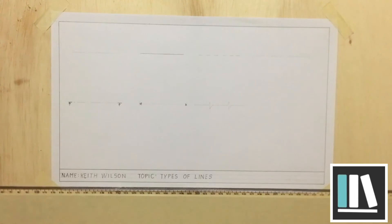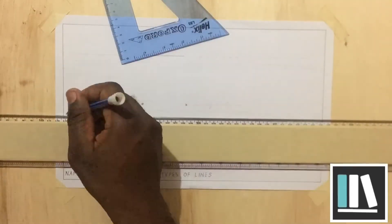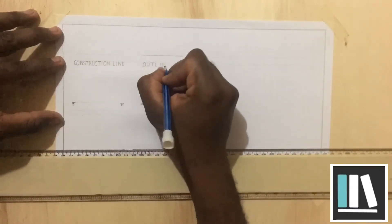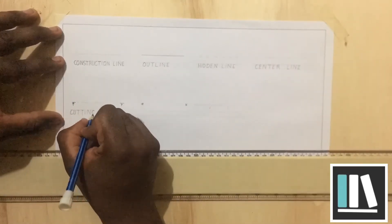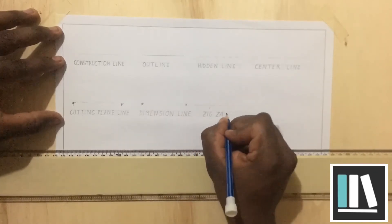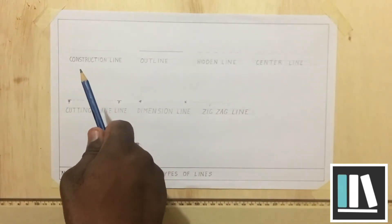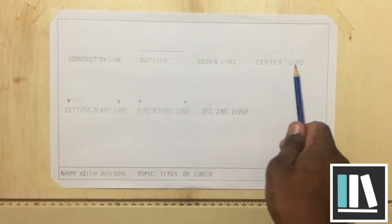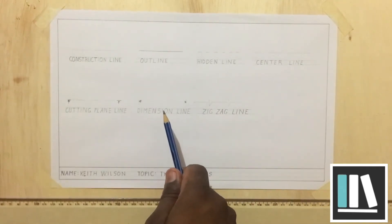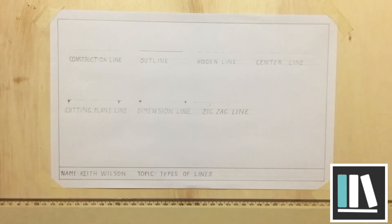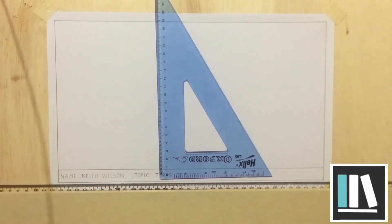I am also going to explain the usage of five of the line types shown here. The other two you may not fully grasp the concept of how to use, given the basic level of TD that we are exploring in TD101. So I am going to write the names of the lines. The five types of lines we will explore today are: the construction line, the outline, the hidden line, the center line, and the dimension line. We will start off with the construction line and the outline, which are two of the most commonly used lines in technical drawing.